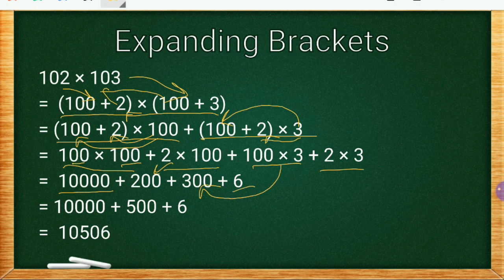So we have 10,000 plus 200 plus 300 plus 6. 200 plus 300 is 500, so 10,000 plus 500 is 10,500, plus 6 equals 10,506. Don't you think this is much easier than multiplying 102 and 103 directly?